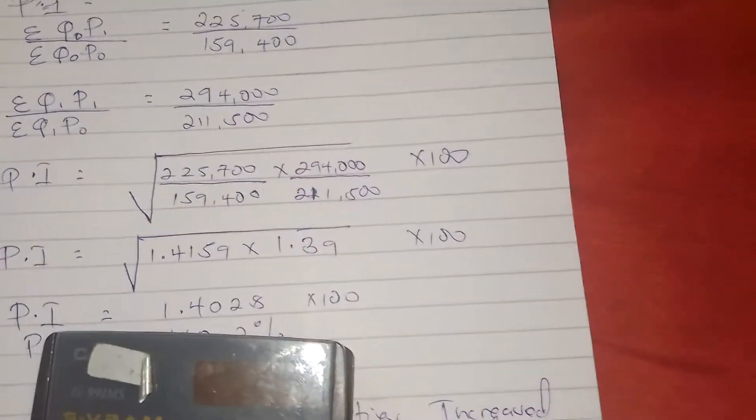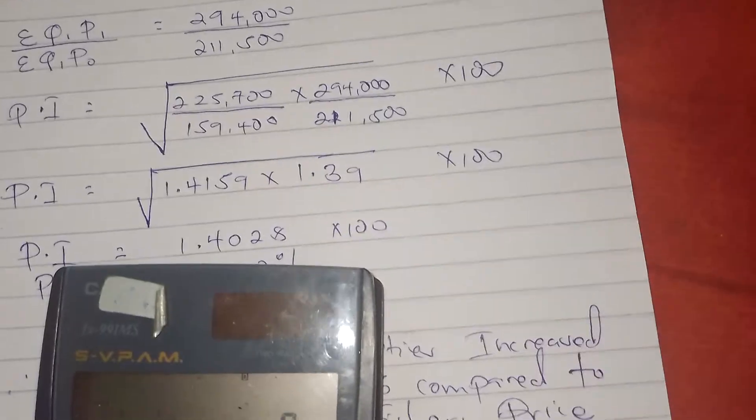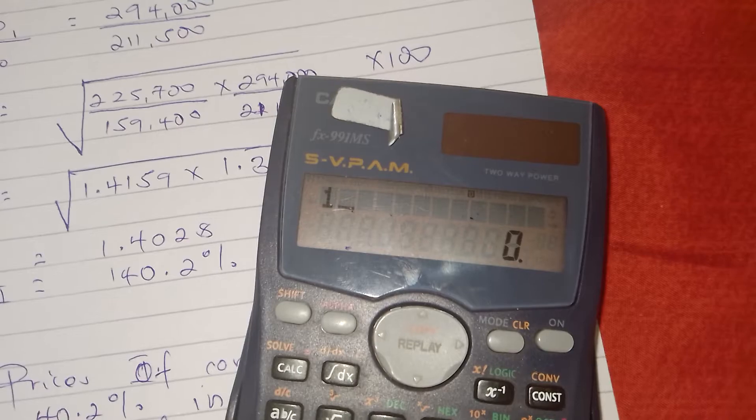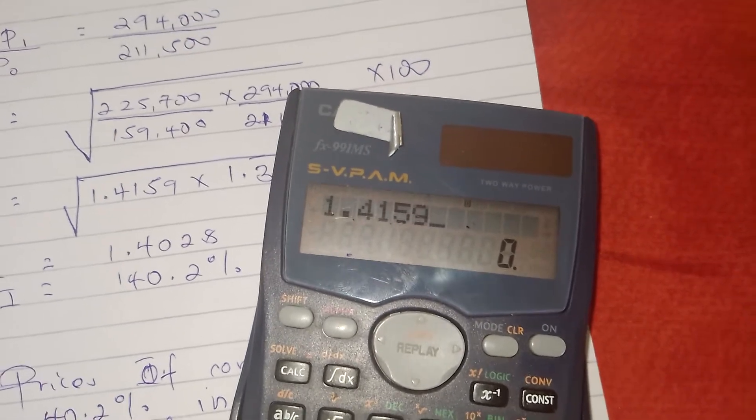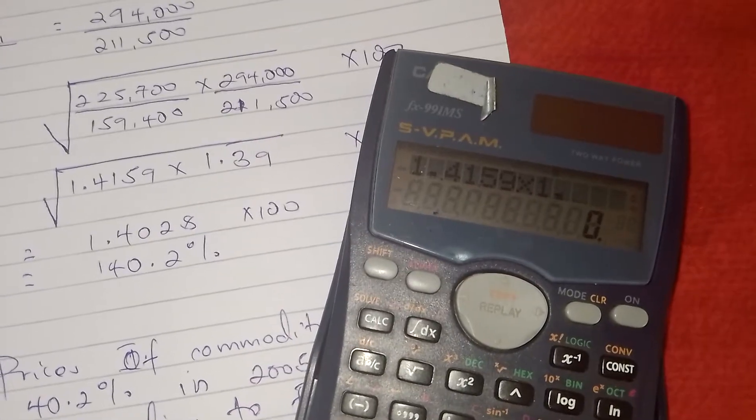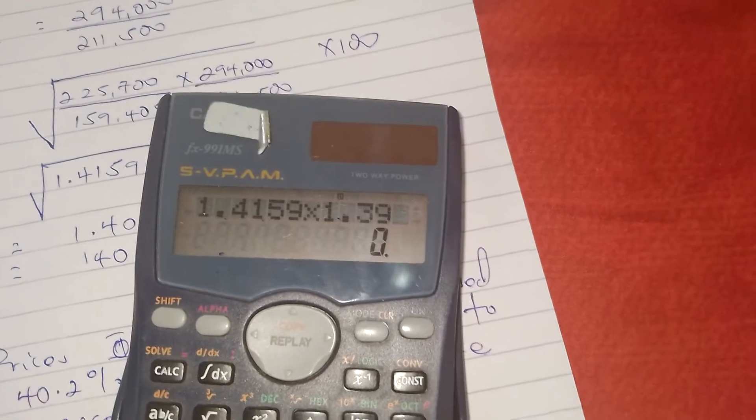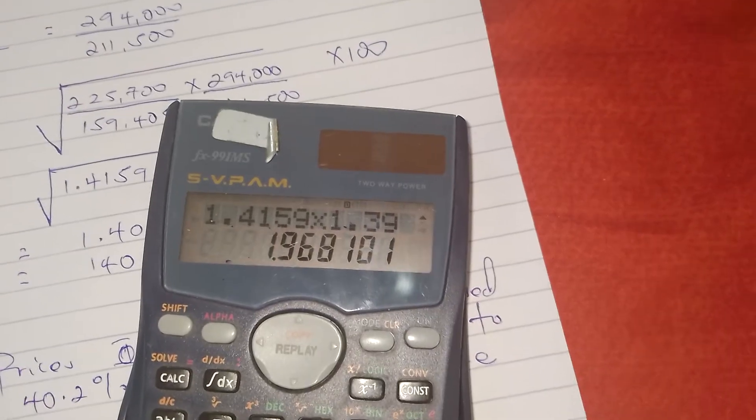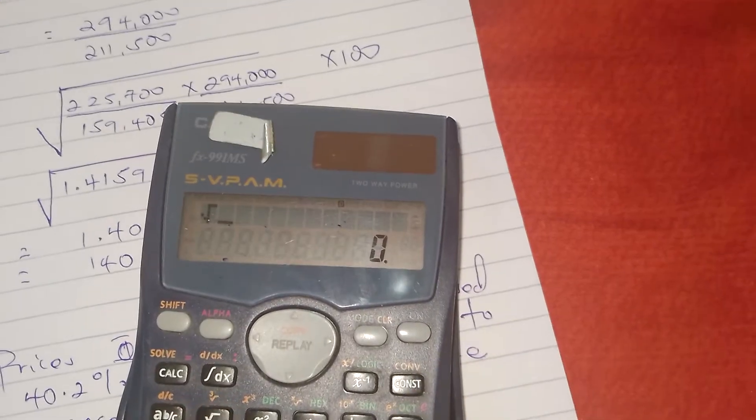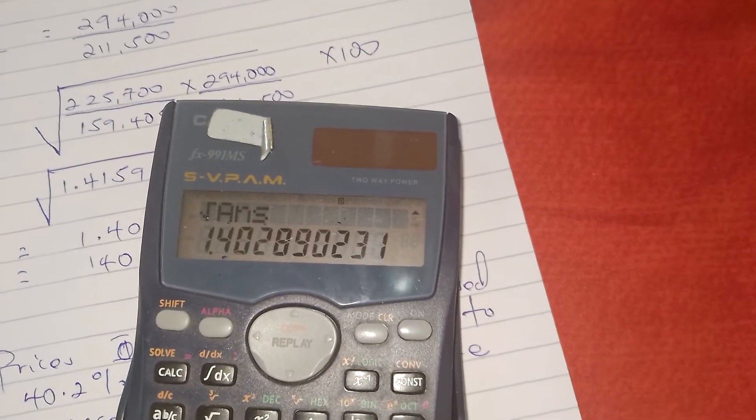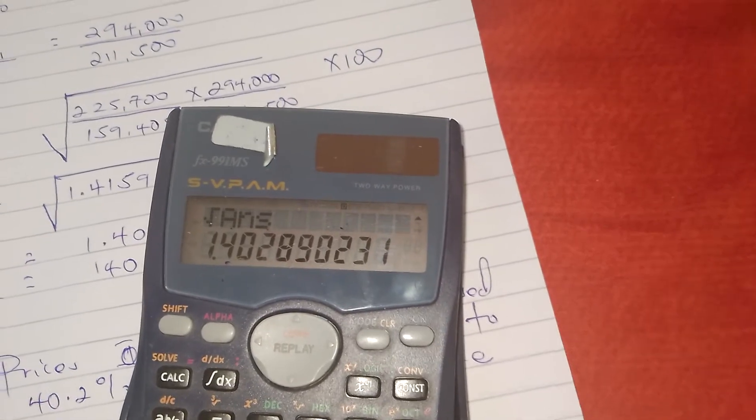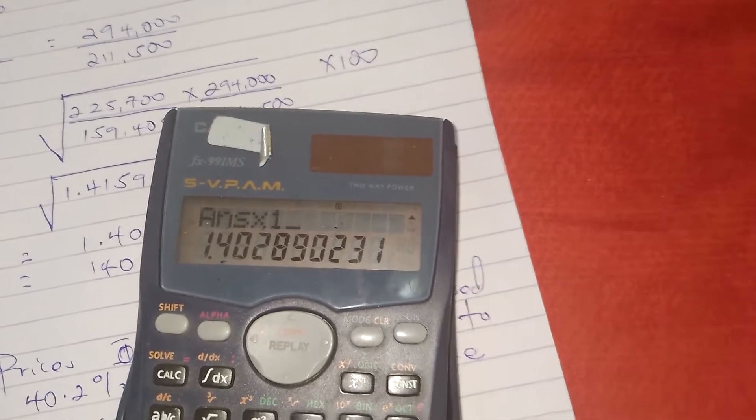After getting this, we get 1.4159 times 1.39. That's what we get. Then we get the square root of the answer which is 1.402, then we multiply by 100.